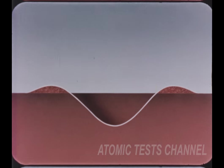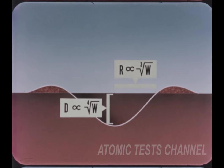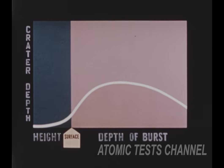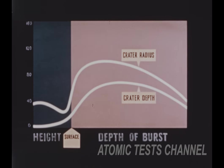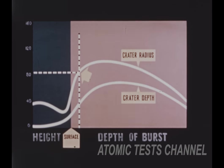Crater radius from a given burst will vary as the cube root of the yield. It's important to remember that the crater's depth will vary only as the fourth root of the yield, so increases in yield will affect depth proportionately much less than they will diameter. Taking a one kiloton yield for our basic curve plotting crater depth against depth of burst, comparing this with our crater radius versus depth of burst curve, we see quite different rates of development.